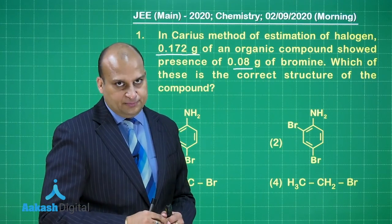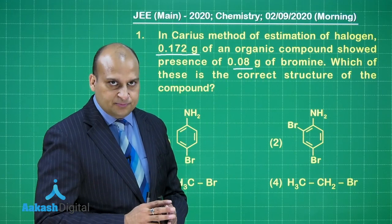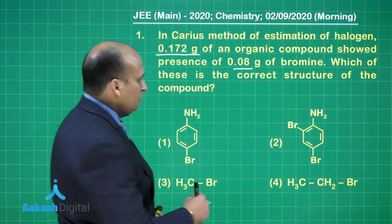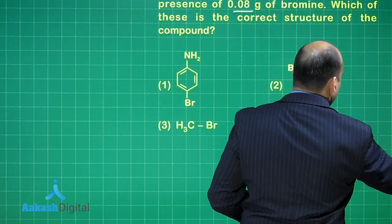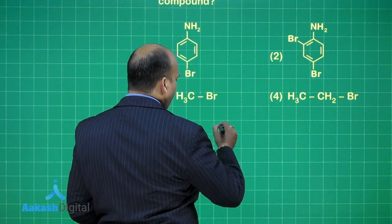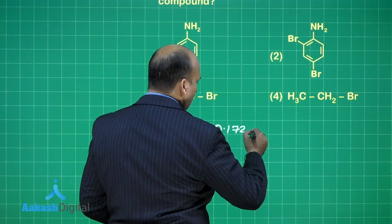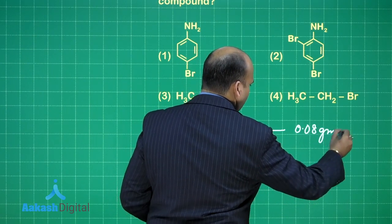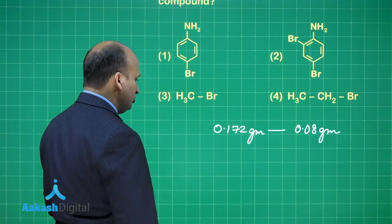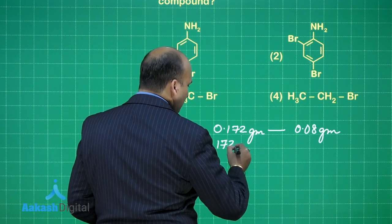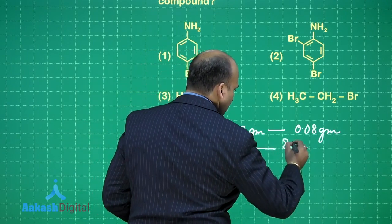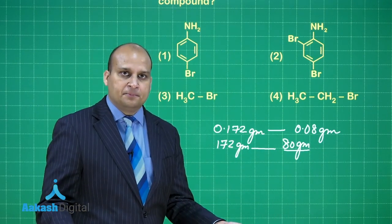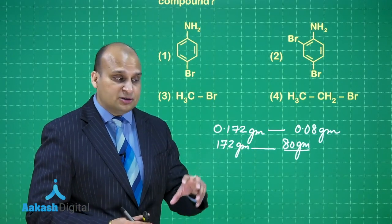Now, if I want one mole of bromine, I want the mass to be 80 grams. So, in how much mass will you be having 80 grams of bromine? The calculation is very simple: if you are having 0.172 gram of the compound which contains 0.08 grams of bromine and I multiply by 1000, then in a compound whose mass is 172 grams there should be 80 grams of bromine. See, I am not using any formula for the Karius method. This is the trick that the examiners play with your brain.